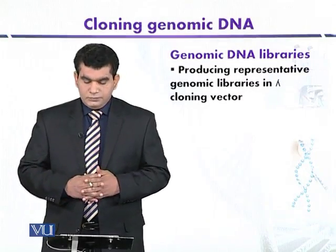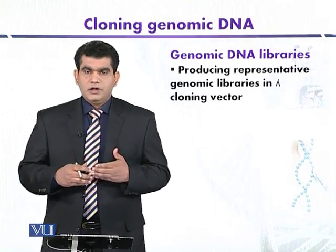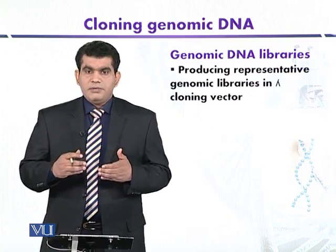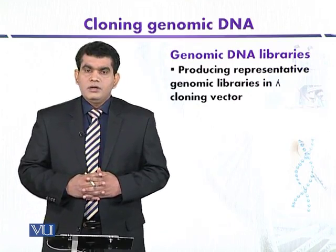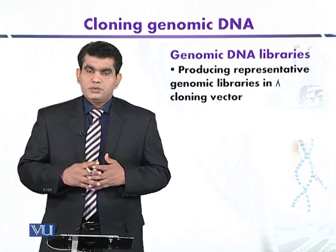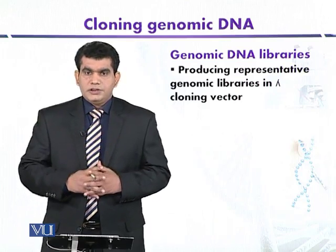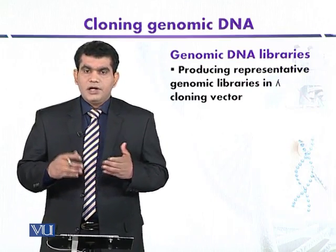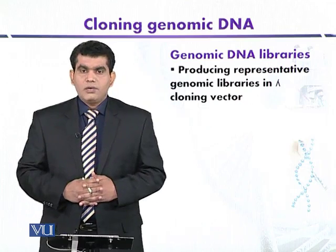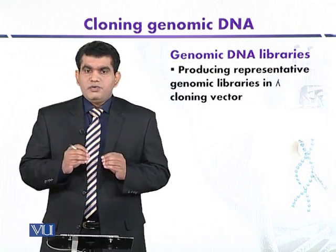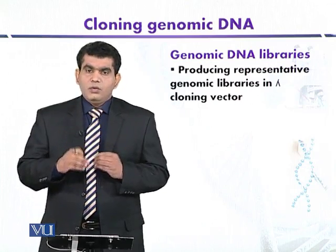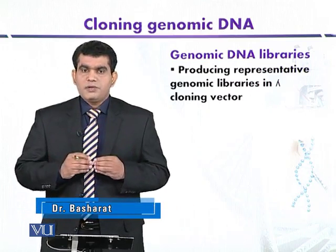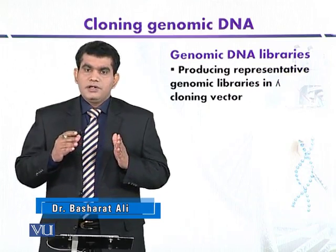We will focus on how we can produce genomic libraries by cloning DNA in bacteriophage lambda. Suppose we are going to clone a particular gene from the human genome, which is comparatively larger in size compared to other organisms. If we want to screen our clone of interest or a particular gene from the complex human genome, we have to digest it into discrete fragments.